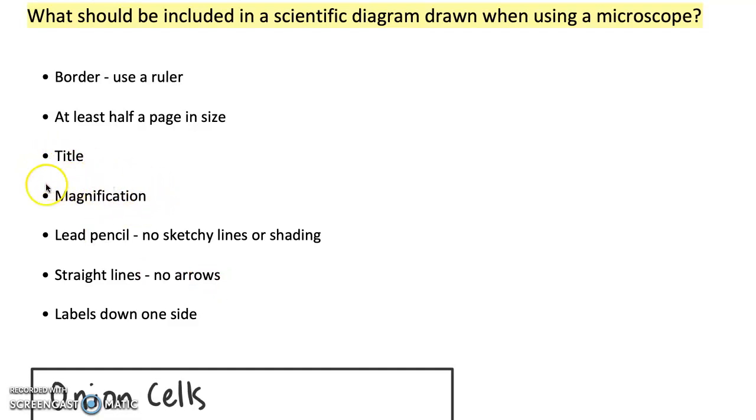You include the magnification so the person viewing your diagram knows how magnified it was. You always use lead pencil. There's no sketchy lines or shading—it's a very simple drawing. When you are labeling parts, it is straight lines. We don't draw arrows because they can just add to the diagram and make it a bit more confusing. Just straight lines, and we do all of our labeling down one side.